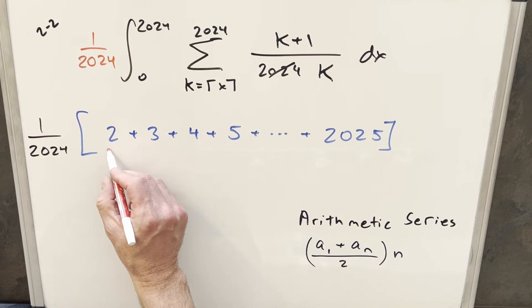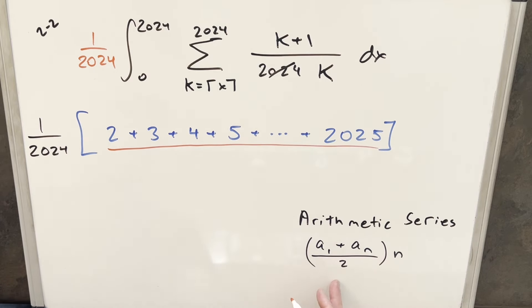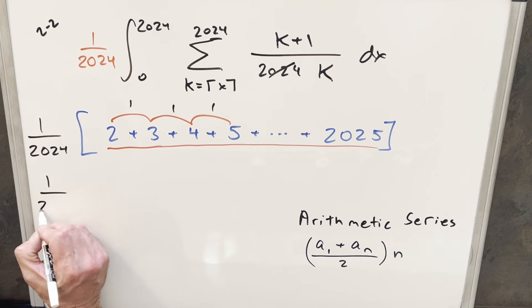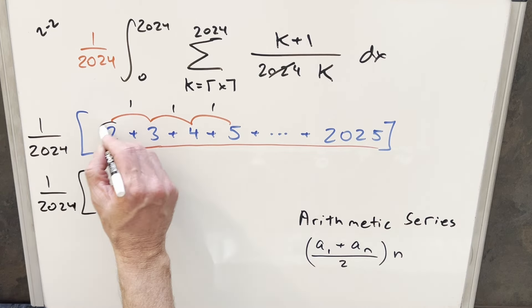Okay, so what I want to do to add up all these numbers right here is I'm just going to use the arithmetic series formula that we have over here to the right. Just notice the difference between each term is just the same value, it's just going to be one in each case, that's going to allow us to use this. So let's bring down our 2024. Using this, we need our a_1 value, that's just going to be the first term, that's just going to be two. And then we need our a_n value, our last value, that's just going to be this 2025.